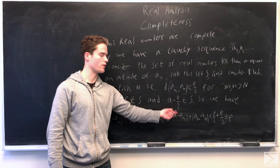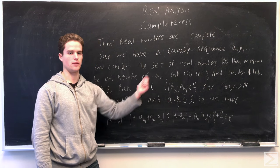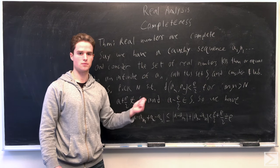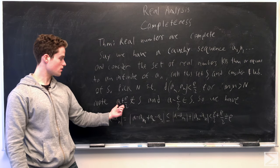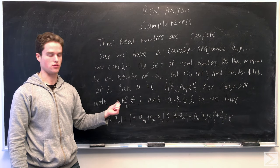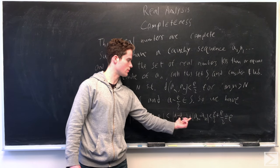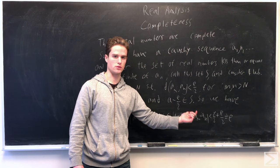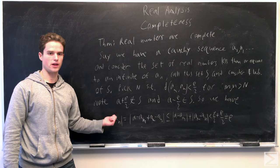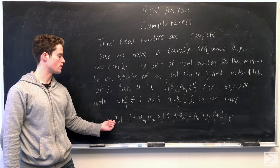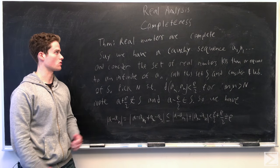Since we pick M such that A_M is one of the points above A minus epsilon over 2, and every point after M is within epsilon over 2 of A_M, it's also going to be above A minus epsilon over 2. So the absolute value of A minus A_M is less than epsilon over 2. Summing these two together, we get epsilon over 2 plus epsilon over 2 equals epsilon. So as N goes to infinity, we can find n greater than big N such that the distance |A_n minus A| is less than epsilon. The sequence A_n converges to A, and so the real numbers are complete.